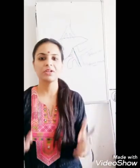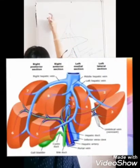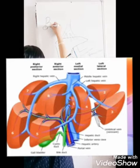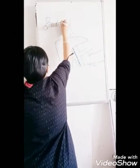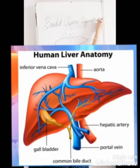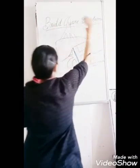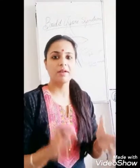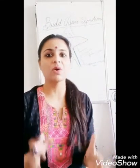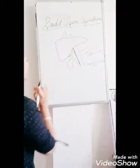Hello viewers and my dear students, I am back with a new video and today we will discuss about the topic Budd-Chiari Syndrome. In Budd-Chiari Syndrome, the obstruction occurs in the hepatic veins or in the terminal inferior vena cava.